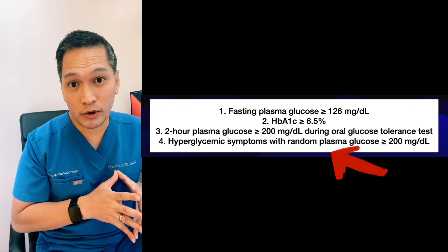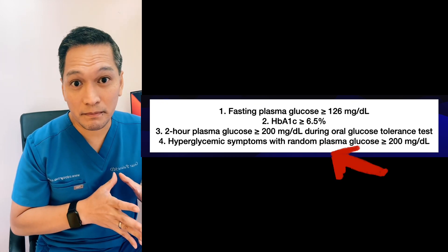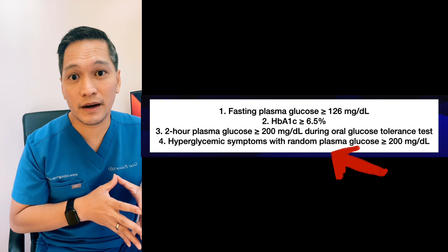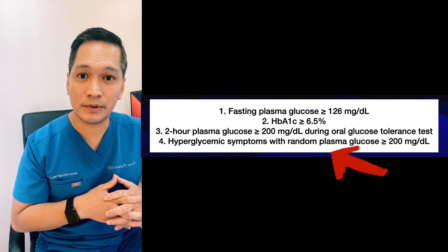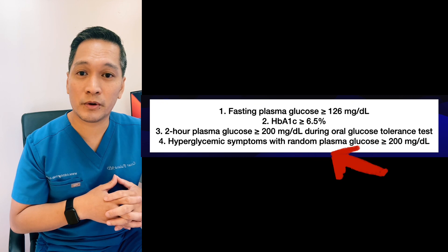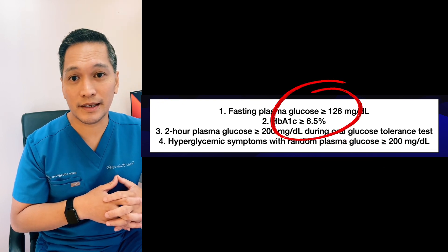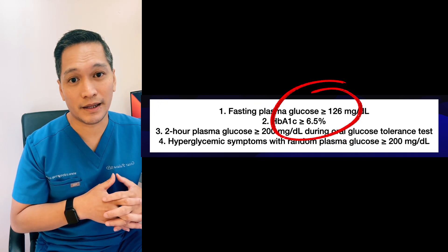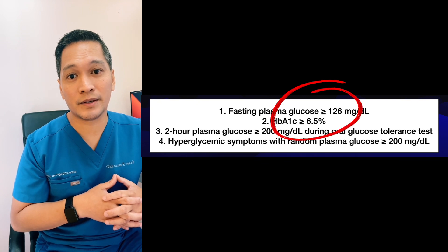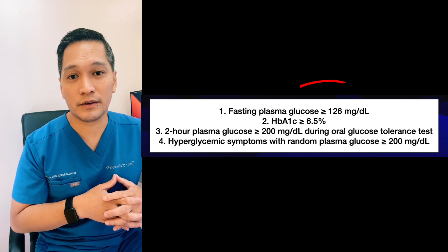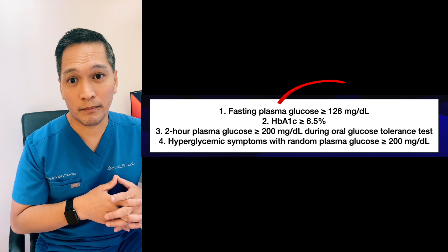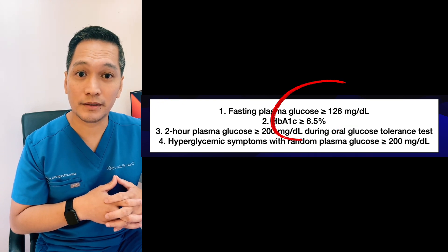It is also important to note that if the patient presents with severe hyperglycemic symptoms and a random plasma glucose of more than 200, then a confirmatory test is not needed. If the patient presents with asymptomatic hyperglycemia, a diabetes diagnosis requires two abnormal test results, either from the same sample or from another sample.